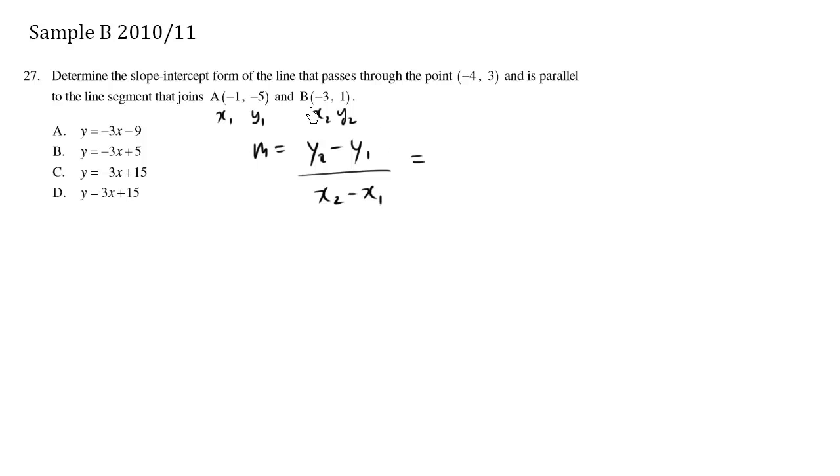So the slope here is 1 minus y1, which is negative 5, over x2, which is negative 3, minus negative 1. So two negatives make a positive, 1 plus 5 is 6, and negative 3 plus 1 is negative 2. So the slope is negative 3.